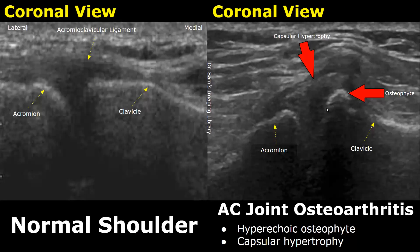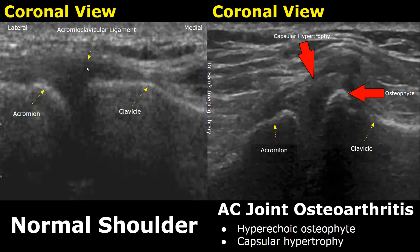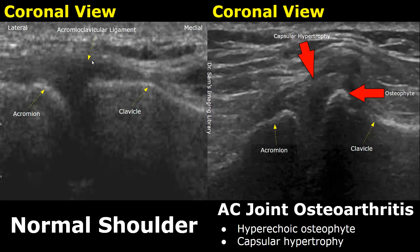Now we will examine the acromioclavicular joint. On one side we will see the acromion, and on the other side we will see the clavicle. Between these two bones is the acromioclavicular ligament, which appears hypoechoic or anechoic. This is the appearance of a normal acromioclavicular joint.